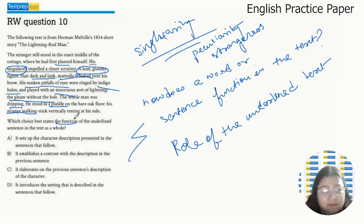Which choice best states the function of the underlined sentence? So the underlined sentence says his singularity impelled a closer scrutiny. Singularity, as I've already said, is peculiarity or strangeness in this context. So let's read the options. It sets up the character description presented in the sentences that follow. Character description.